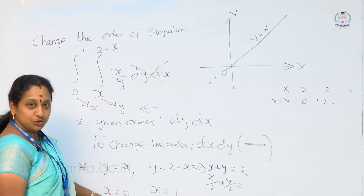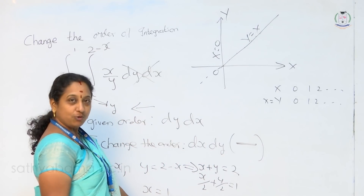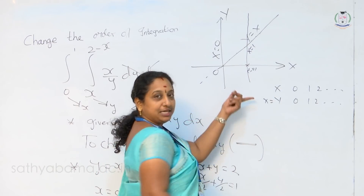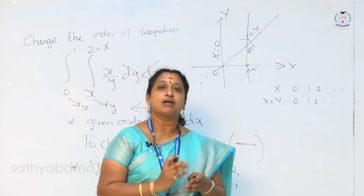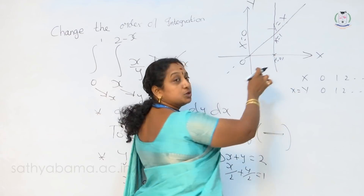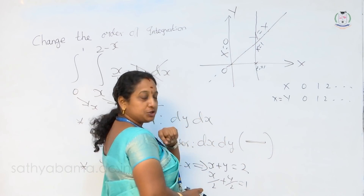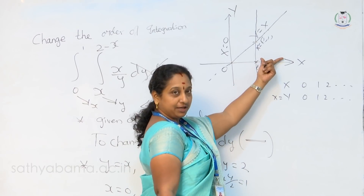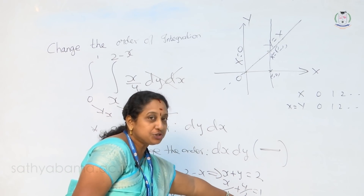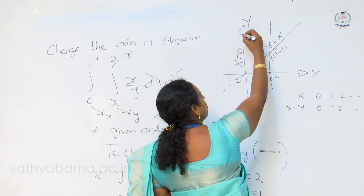Next, plot x is equal to 0 — that is nothing but the equation of the y axis. Then x is equal to 1 — the line parallel to the y axis passing through the point (1,0). Wherever two lines or curves intersect, we have to find the point of intersection. The line y equal to x and x is equal to 1 intersect. Substituting x equal to 1 in y equal to x gives y equal to 1. So the point of intersection is (1,1). We also need to plot x by 2 plus y by 2 equal to 1, which has x intercept 2 and y intercept 2.